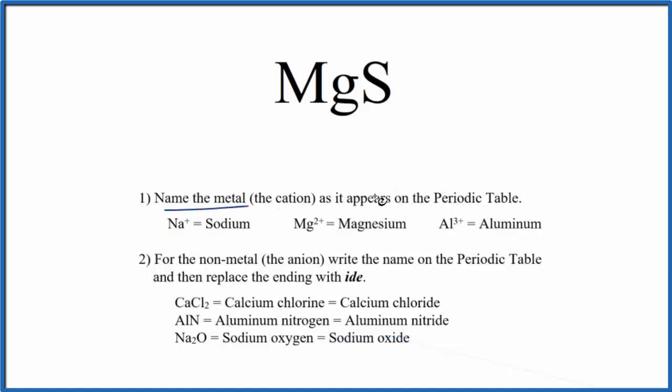We'll first write the name for the metal as it appears on the periodic table. So the magnesium, that's the metal, so we're going to write magnesium.